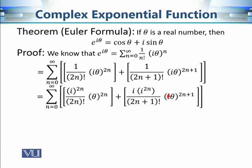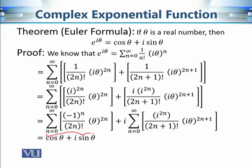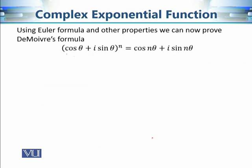Factoring out i from the odd terms, we note that i^(2n) = (i²)ⁿ = (−1)ⁿ. So the even part becomes Σ (−1)ⁿ θ^(2n)/(2n)! and the odd part becomes i · Σ (−1)ⁿ θ^(2n+1)/(2n+1)!. From real analysis, these are precisely the series expansions of cosθ and sinθ respectively, proving that e^(iθ) = cosθ + i·sinθ.